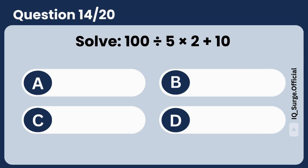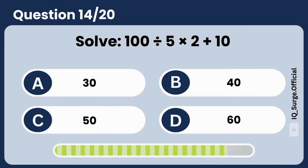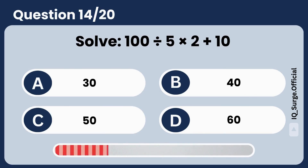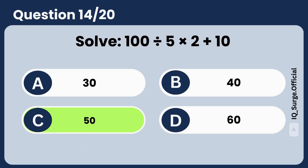Solve: 100 divided by 5 divided by 2 plus 10. Answer: 50. Nicely done.